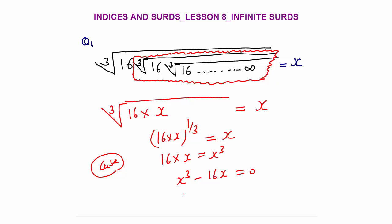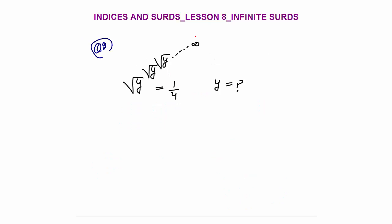So x³ − 16x = 0. Taking x common: x(x² − 16) = 0. Either x = 0 or x² − 16 = 0. x cannot be 0 because the original expression is clearly not zero. So x² − 16 = 0, giving x = +4 or −4. Since x cannot be negative, the only valid answer is x = 4. We can solve these kinds of questions in 20 to 30 seconds in an exam.